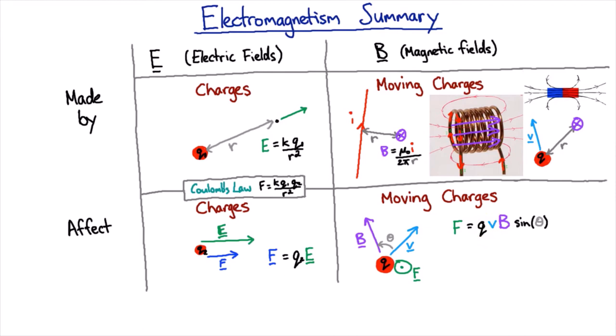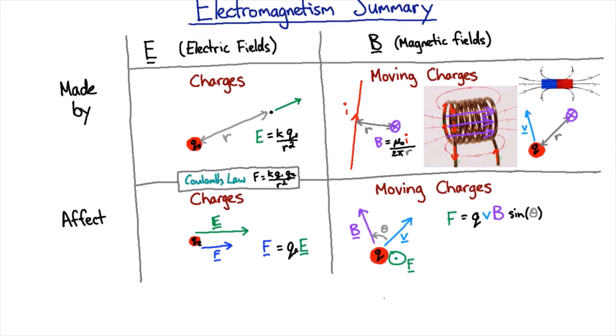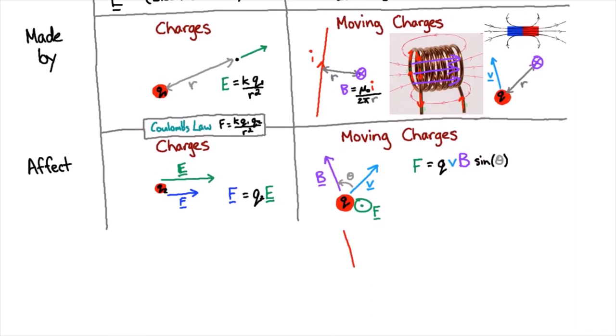And the current is just a whole bunch of charges moving together, and so if we know what happens to one charge, we can figure out what happens to a current. So if we have a current traveling along in a magnetic field, then we should be able to figure out what the force is on that. So is there moving charges in a current? Absolutely, that's exactly what a current is.